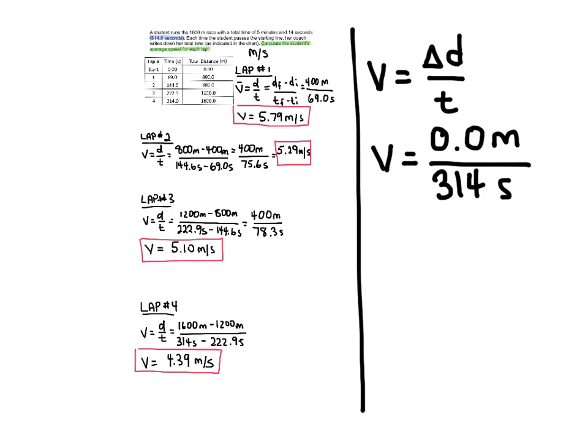If we actually did the math here, you could see that she didn't change her position overall. It took her 314 seconds to do that. And so in the end, her total velocity was zero meters per second.